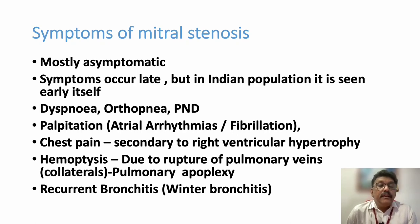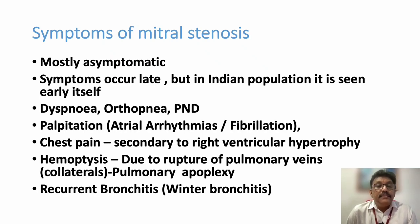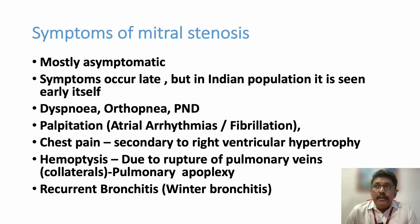Patients can develop secondary right ventricular hypertrophy and pulmonary hypertension, which produces chest pain. Some patients can have hemoptysis due to pulmonary vein or collateral rupture — called pulmonary apoplexy — which is part of pulmonary hypertension. Recurrent bronchitis or winter bronchitis is also very common, as the large left atrium compresses the left main bronchus, producing recurrent infection especially on the left side of the chest.